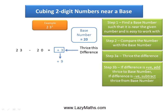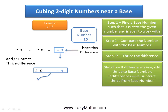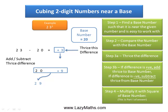The next step is to add the base number 20 with thrice the difference, which is 9, and we get 20 plus 9 equals 29. The last step to get part 1 of the answer is to multiply 29 with the square of the base number. The base number is 20 and the square of 20 is 400.